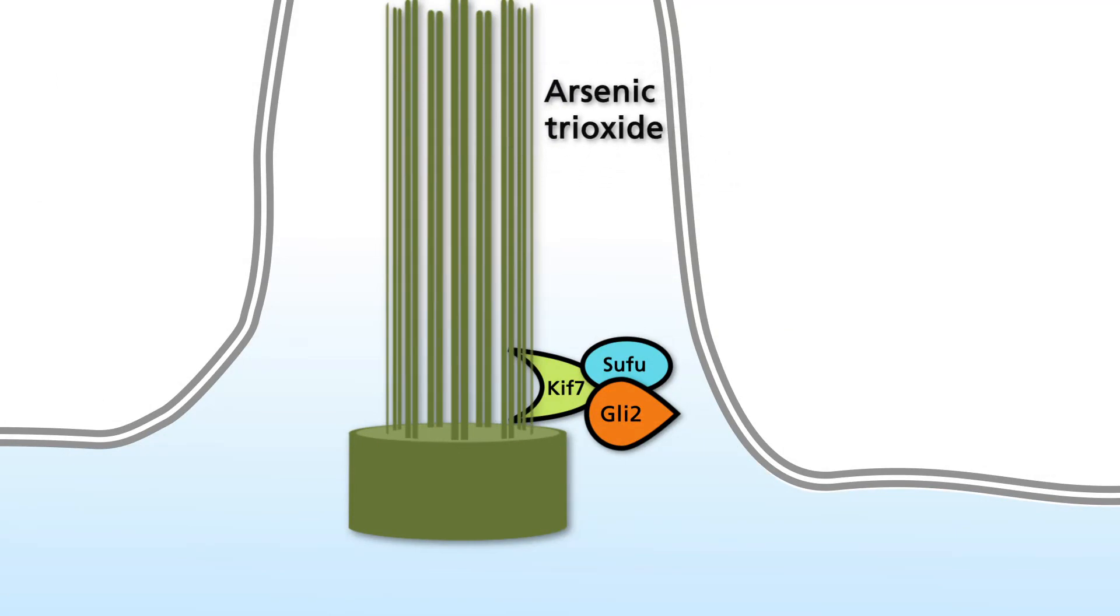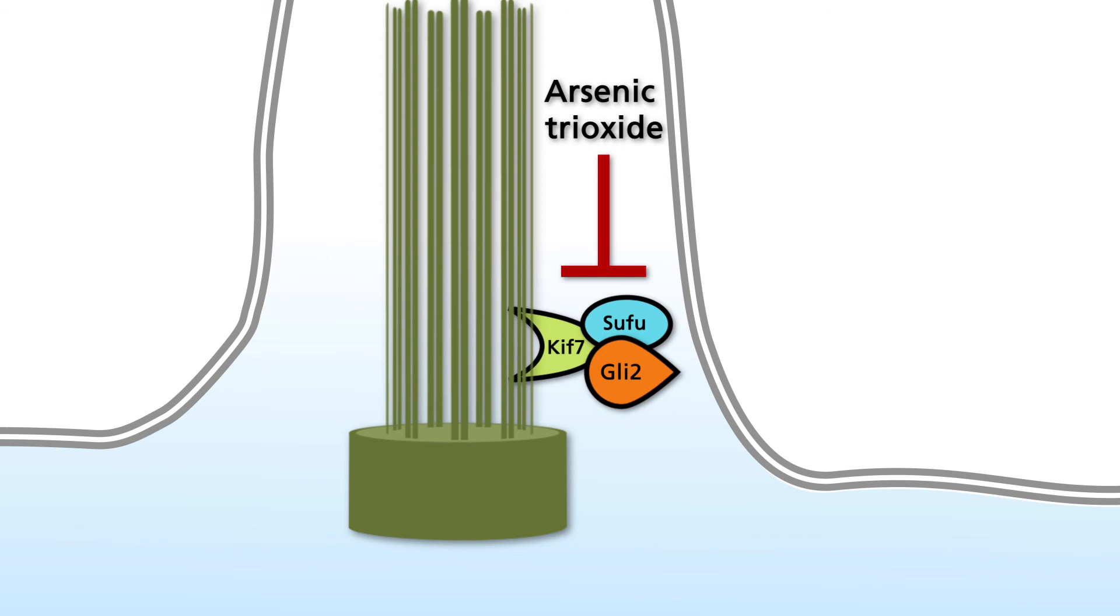Arsenic trioxide is a drug approved by the U.S. FDA for the treatment of acute promyelocytic leukemia. Arsenic trioxide acts as an inhibitor of GLI transcription factors. Arsenic trioxide blocks the hedgehog-induced accumulation of GLI-2 in the primary cilium. It has yet to be shown that this also applies to the complex of GLI-2 with KIF-7 and SUFU.